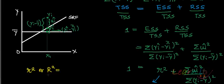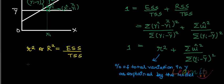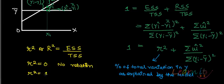In simple linear regression, R square is equal to ESS upon TSS. Note that in multiple linear regression you can't use small r and R square interchangeably, but in simple linear regression you can. If R square equals 0, it means there is no relation between X and Y. If R square equals 1, it means there is a perfect fit.